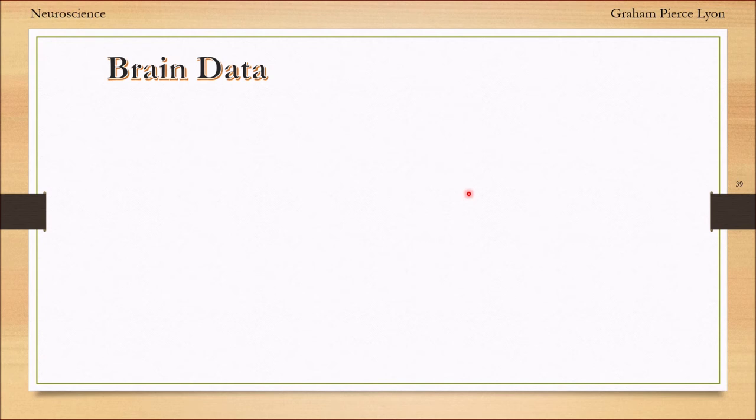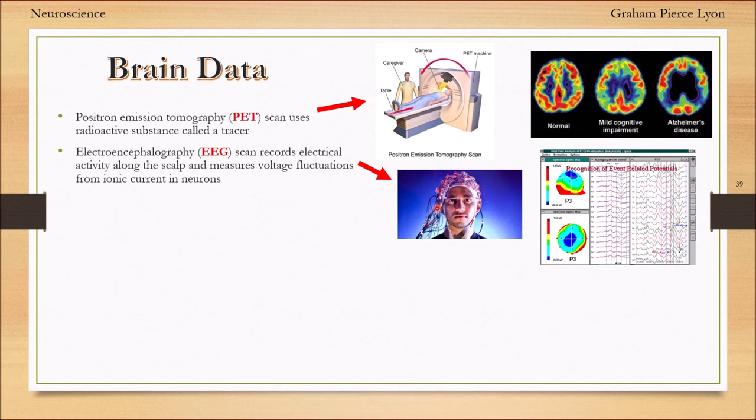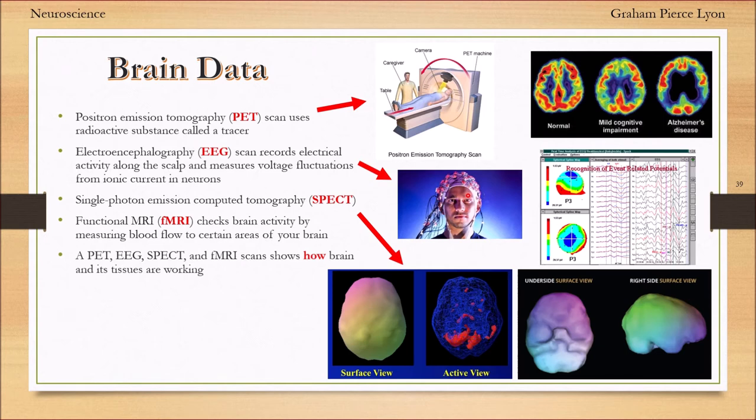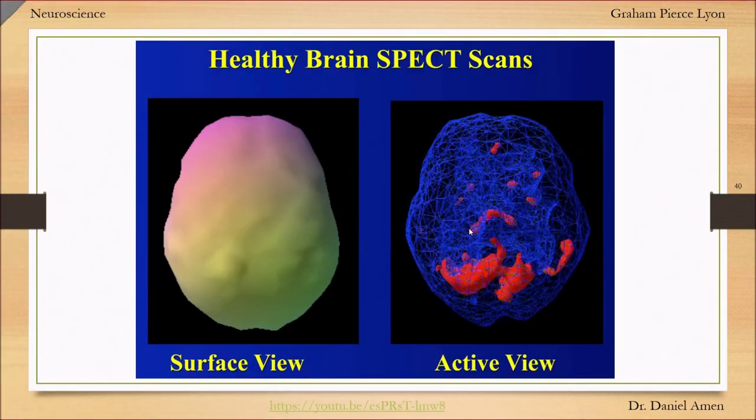How do we know a lot of this stuff? Where do we get our data? We have positron emission tomography or PET scan that uses a radioactive substance called a tracer. We have an EEG that records electrical fluctuations along the surface of your scalp. We have SPECT scan - single photon emission computed tomography with surface or active view. We also have functional MRIs that check brain activity by measuring blood flow to certain areas. These scans show how your brain and its tissues are working. We also have other imaging like MRI, CT scans, x-rays, ultrasounds that mainly reveal structure.